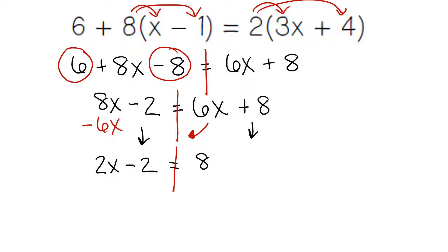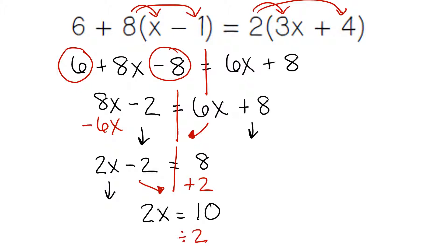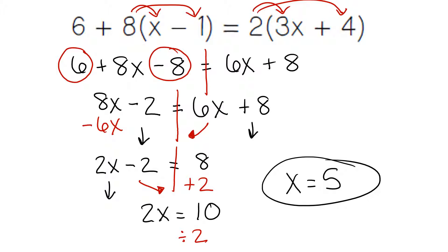Still combining like terms: 2 and 8 are on opposite sides, so we do the opposite operation. Instead of minus 2, we do a plus 2. 8 plus 2 is 10. And our last step, when we have only two numbers left, is to divide. We're going to divide by 2. 10 divided by 2 is 5. x equals 5.